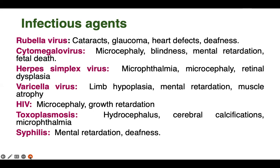If cytomegalovirus is present, it may cause microcephaly — that is, the size of the brain becomes small, depending on the level of infection — then blindness, mental retardation, and fetal death. If herpes simplex virus is present in the body, it can cause microphthalmia — where the size of the eyeball becomes small — microcephaly, and retinal dysplasia.